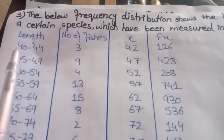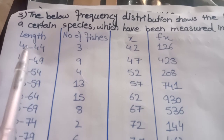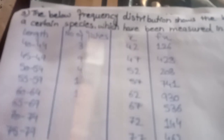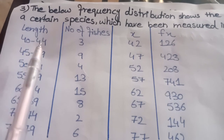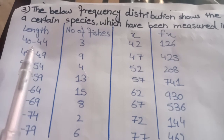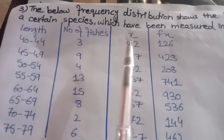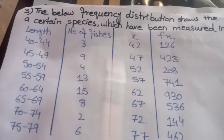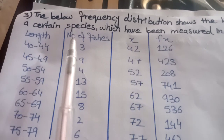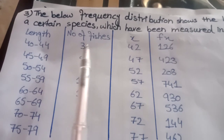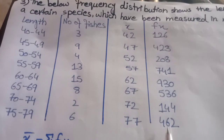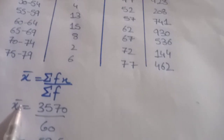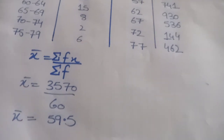For this, first we need to calculate x. How do we calculate x? From the given class intervals, we find the mid value — that is called x. So the middle value of 40 and 44 is 42. You can calculate: 40 plus 44 divided by 2 gives 42. So first we find the midpoint of all intervals — that is x. Then we have x and number of fishes as frequency f. Multiply fx, then at the end calculate sum of frequency and sum of fx, adjust in the formula, and we will get the answer.